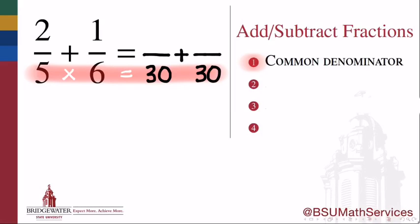The quickest way to do this is to multiply the two existing denominators, such as in this example, 5 times 6, to give me a common denominator of 30 for each of the fractions that I want to add.